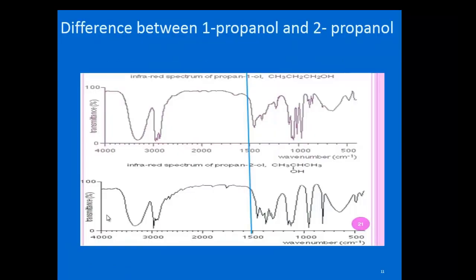We can also differentiate conformational isomers using IR spectroscopy. For example, 1-propanol and 2-propanol both contain an O–H group, so their functional group region shows mostly the same type of absorption. However, the fingerprint region shows clearly different absorption peaks, allowing us to identify which spectrum belongs to 1-propanol and which belongs to 2-propanol.